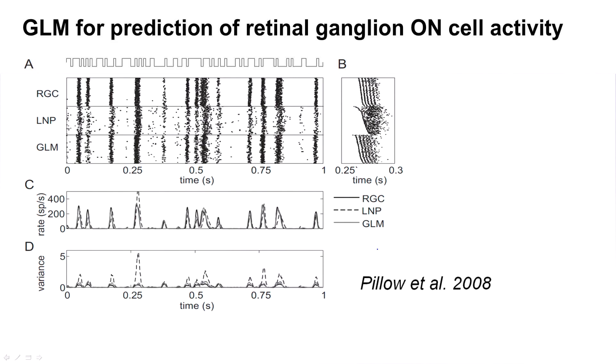Let's see how well such a model does for the prediction of retinal ganglion cell activity. There's a large field stimulation of the retina. Light is switched on and off. And this retinal ganglion cell, one cell, is responding like this to several repetitions of the stimulus. If you just take an LNP model, you find this kind of responses after optimization of parameters.